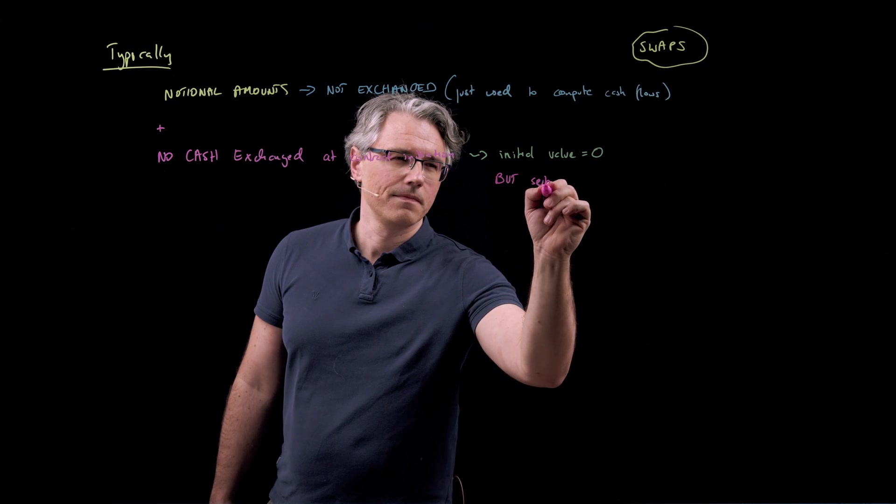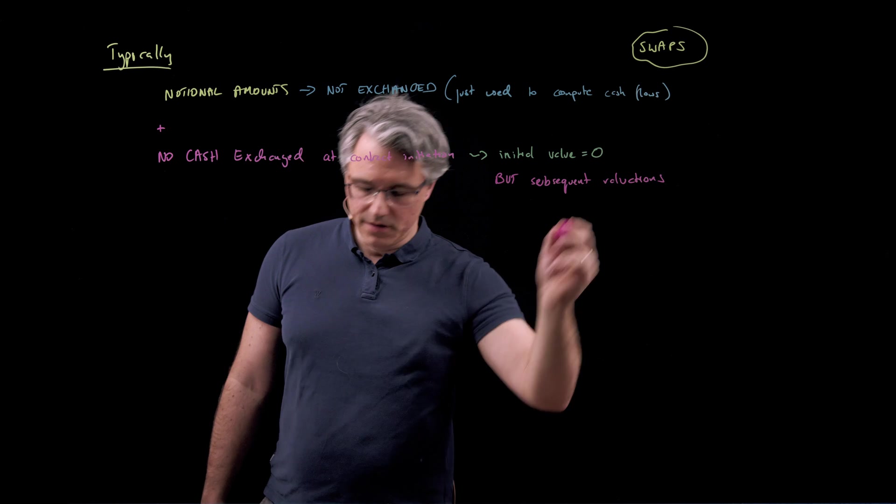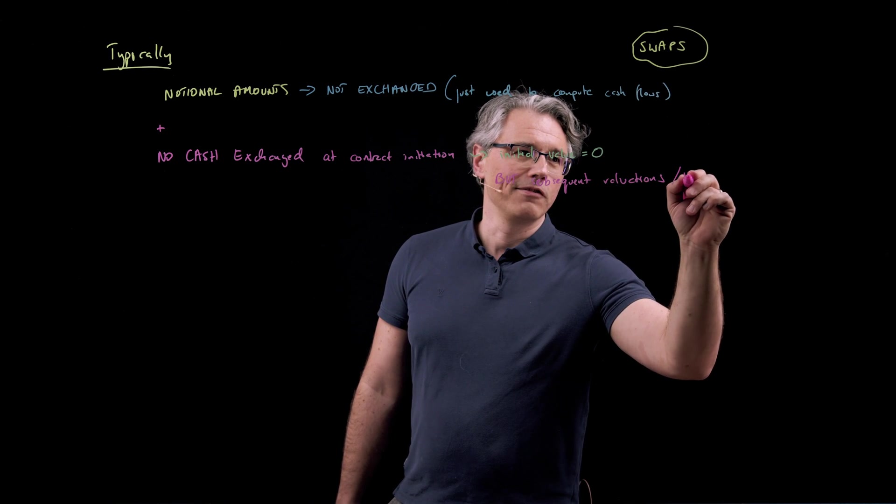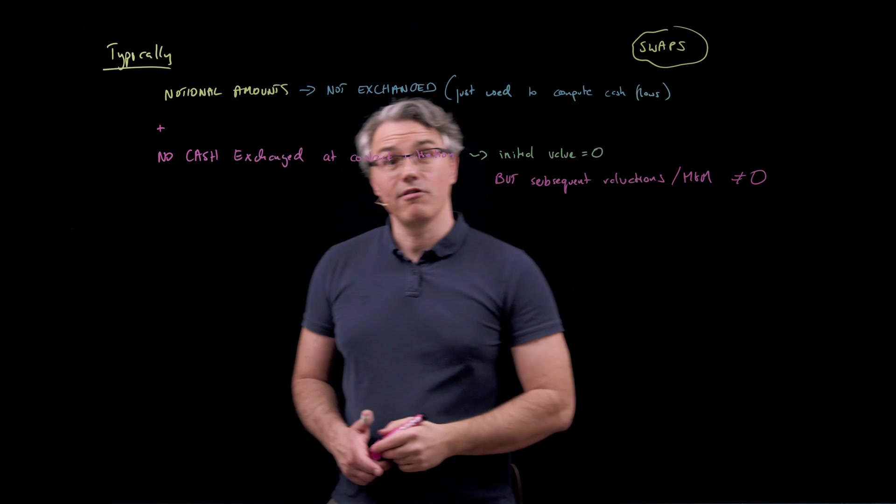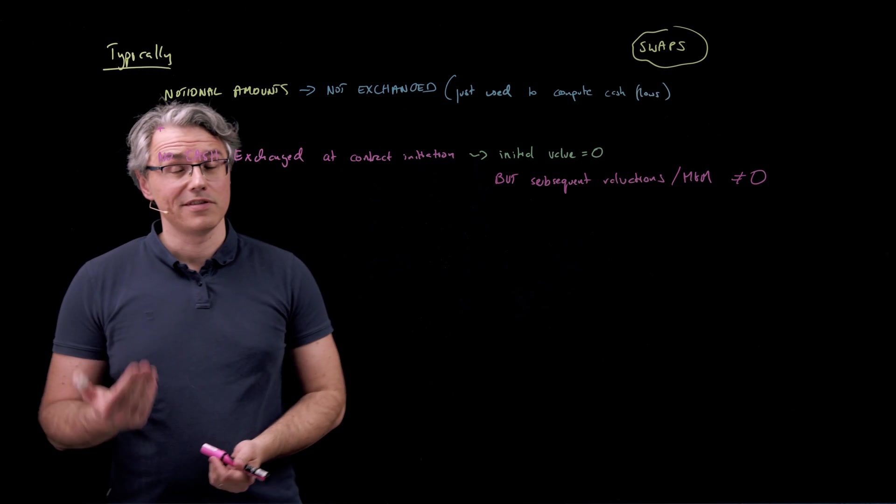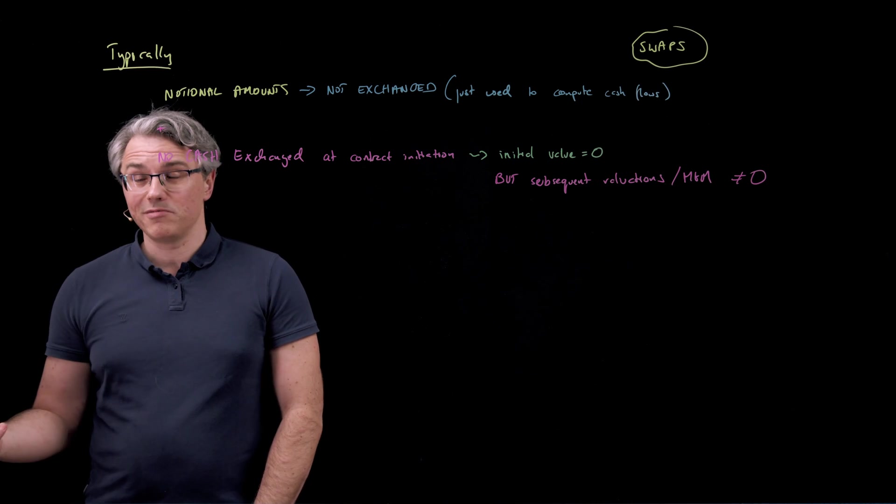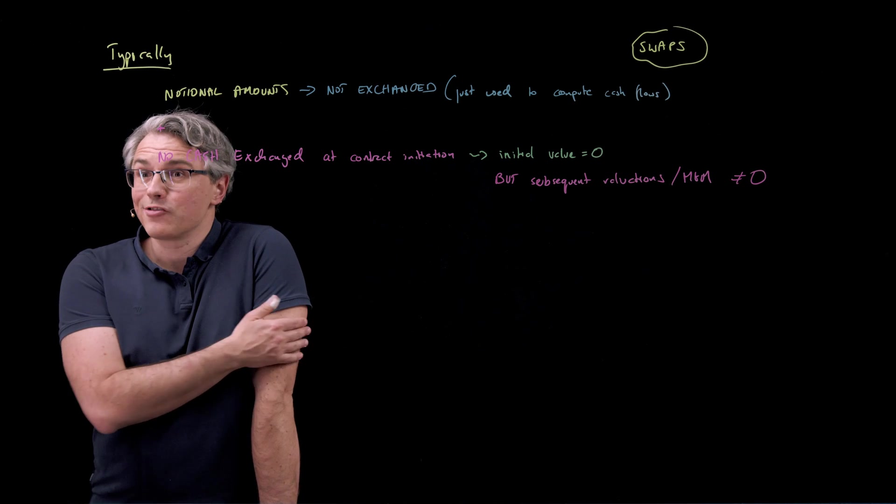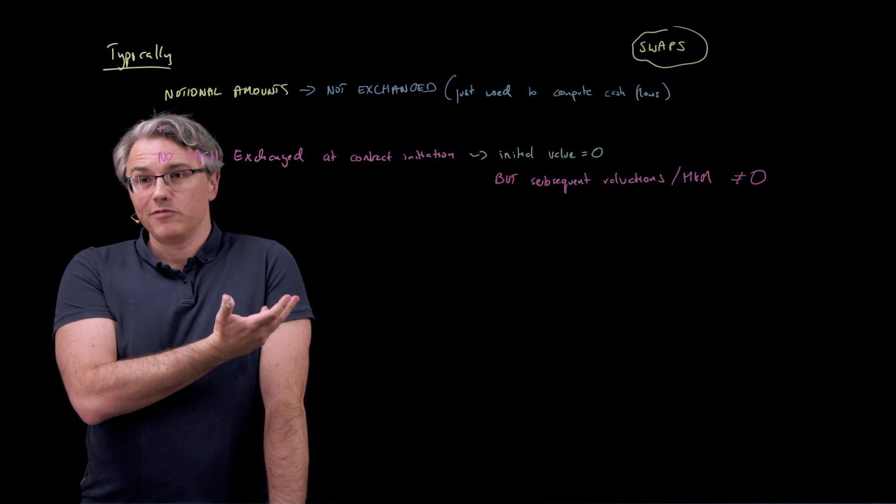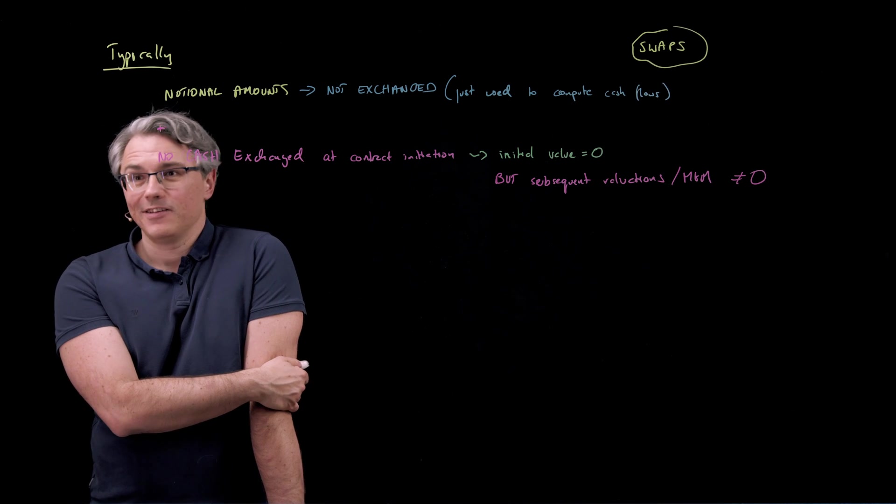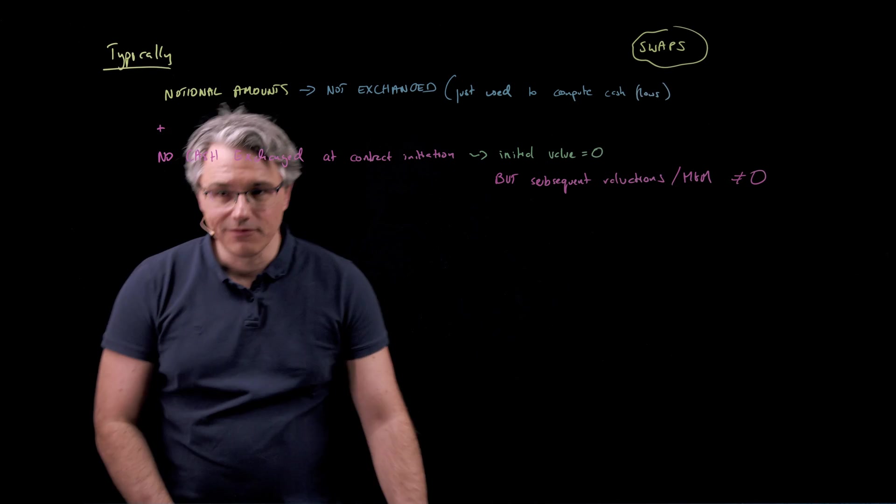But subsequently, or subsequent valuations are typically, or you know the mark to market to use a term from the previous video, are going to be different to zero. Because I agreed to pay you 2.76 in order to receive the market reference rate from you, and then as time goes by and the actual market reference rate may differ from what I had expected it to be, that's going to either make the swap valuable for me or have a negative value for me but positive to the other side.